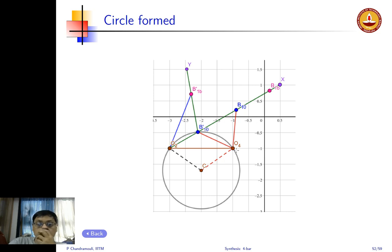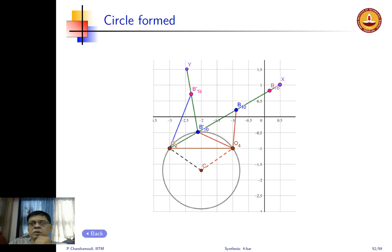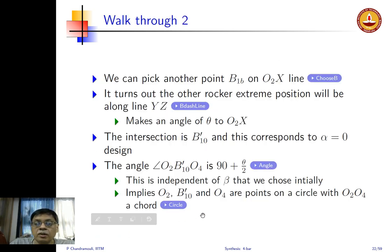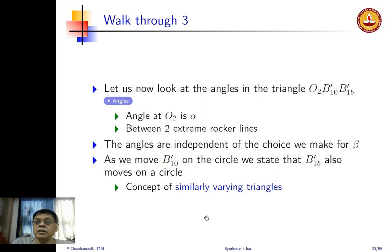As beta changes, B'10 moves to different locations — all lying on this circle. So the locus of B'10 is a circle. Now let us look at the triangle O2–B'10–B'1b, which is one of the design choices made earlier. I want the angle at O2 in this triangle to be alpha — the desired value. The angle at B'10 is 180 − theta (since the extended green line gives theta), and therefore the remaining angle is theta minus alpha. Importantly, these angles show no dependency on beta.